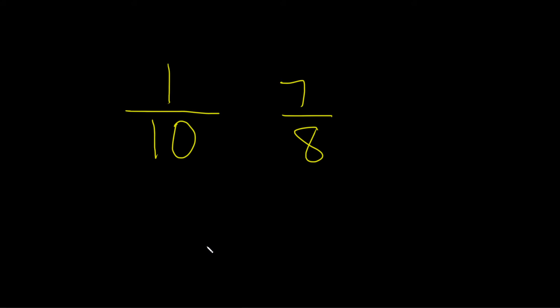In order to compare two fractions, we need to have what's called like fractions. That means that the denominators need to be the same. These are called unlike.